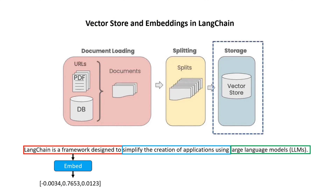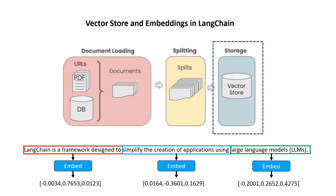You can convert each chunk into a vector of numbers through the so-called embedding layers or embedding functions. This way, you can convert your input text into a set of vectors of numbers, and you store those vectors into a database which is called VectorStore. The VectorStore is an index of a set of vectors corresponding to different chunks of your input data.